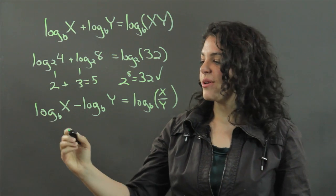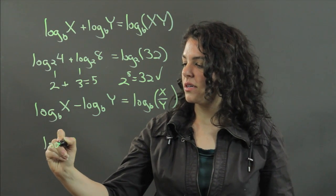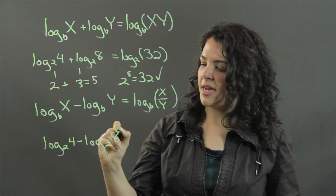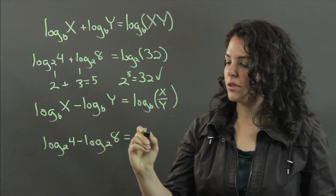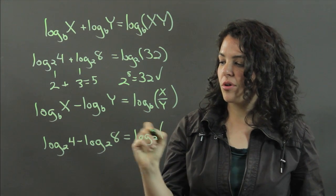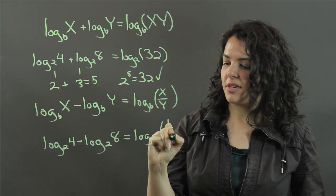So let's try one of those out. If we have the log base 2 of 4 minus the log base 2 of 8, that is equal to the log base 2 of 4 over 8, which simplifies to 1 half.